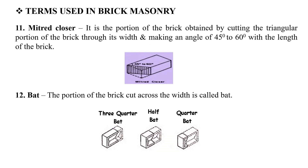The next type is also a beveled closer — it is the portion of a brick obtained by cutting the triangular portion of a brick through its width and marking an angle of 45 to 60 degrees with the length of the brick. The portion of the brick is cut across the width, and it is called a bat.